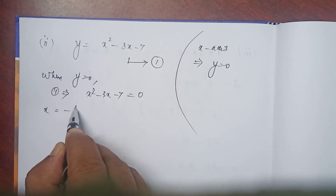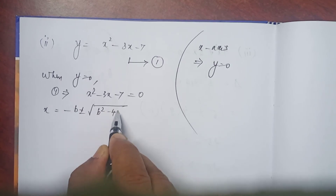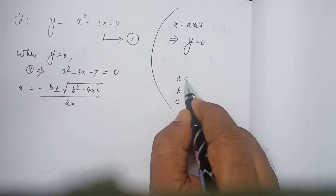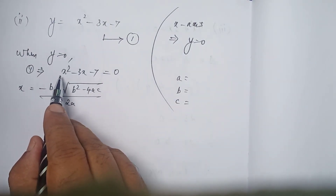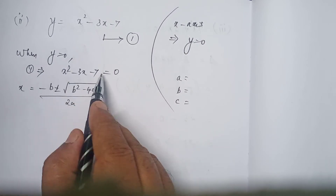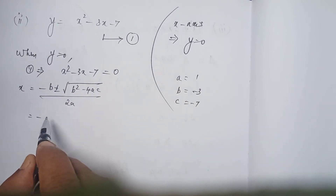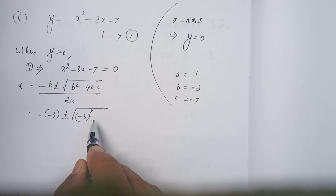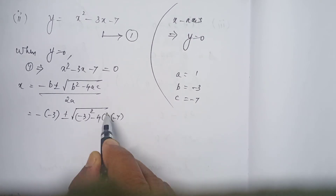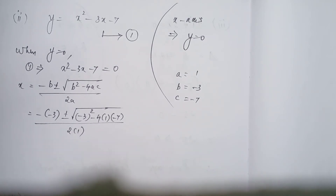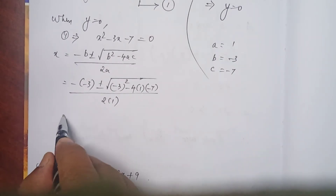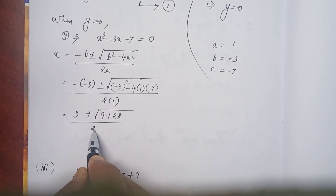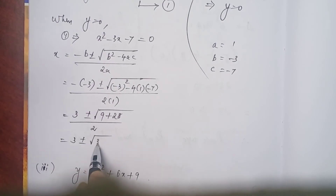In that case, use the quadratic formula: x = (−b ± √(b² − 4ac)) / 2a. Here a = 1, b = −3, c = −7. Substituting: x = (−(−3) ± √((−3)² − 4·1·(−7))) / (2·1) = (3 ± √(9 + 28)) / 2 = (3 ± √37) / 2.